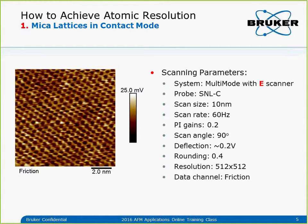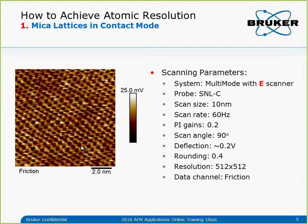Let's go to examples and talk in more detail about how to achieve atomic resolution imaging for each case. The first is imaging mica lattice in contact mode — the example I already showed. For this, the system I used is a multimode with E-scanner, and the probe I used is SNLC. I briefly mentioned that we want to use a small and soft cantilever, so SNLC is typically my choice for this contact mode atomic resolution imaging of the mica lattice.